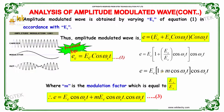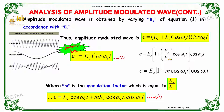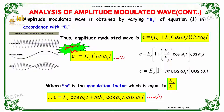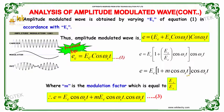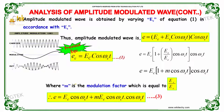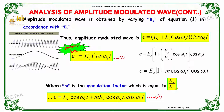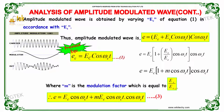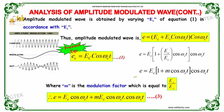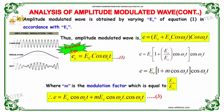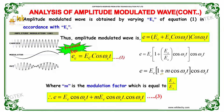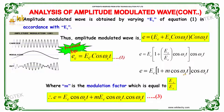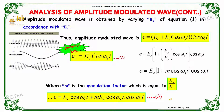We define M as the modulation factor, which is E_s divided by E_c. So the equation becomes E_c · (1 + M · cos(ω_s · t)) · cos(ω_c · t), where M = E_s / E_c is the modulation factor.